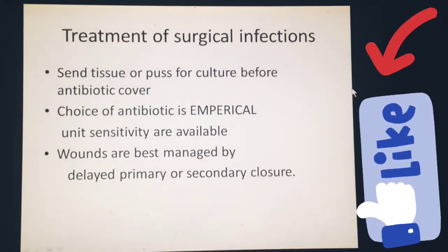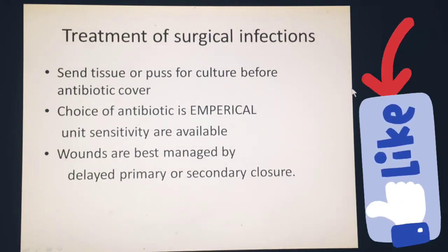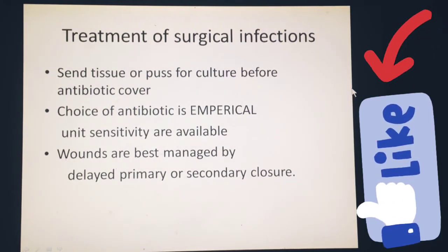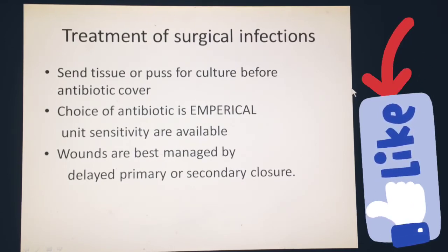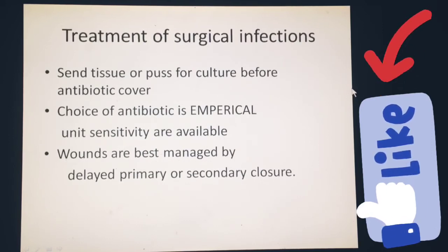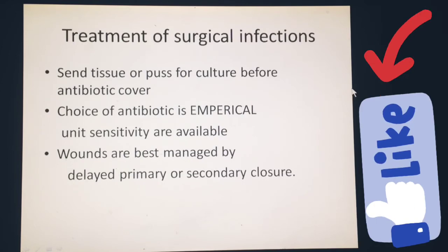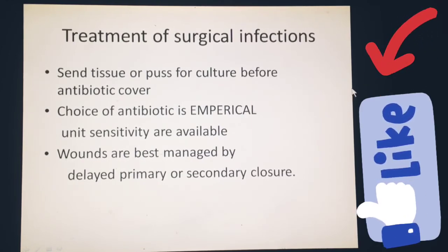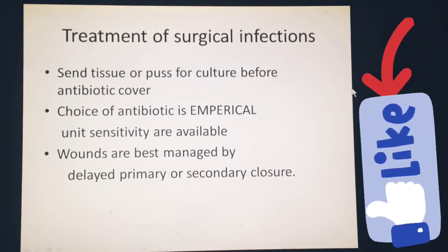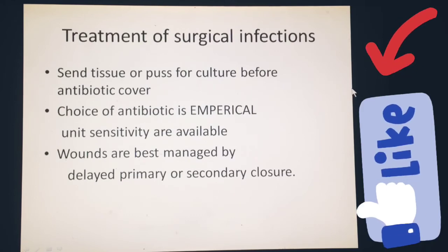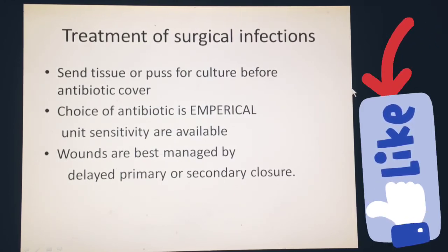To treat a surgical infection, when you find one, send tissue or pus for culture before antibiotic cover. While results are pending, immediately start empirical therapy — choosing an antibiotic based on likely organisms. The wound should be best managed by delayed primary or secondary closure.